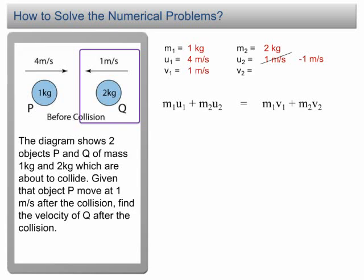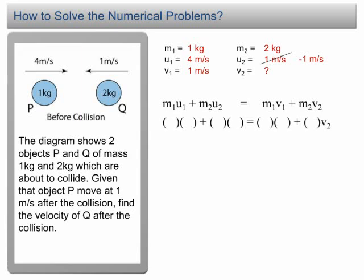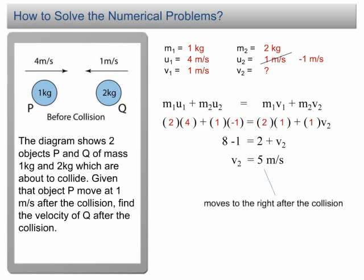After the collision, the velocity V1 becomes 1 m/s and we need to find V2. Plugging into the equation: (2)(4) + (1)(−1) = (2)(1) + (2)V2. Simplifying: 8 − 1 = 2 + 2V2, giving V2 = 5 m/s. The positive value of V2 shows that Q moves to the right after the collision.